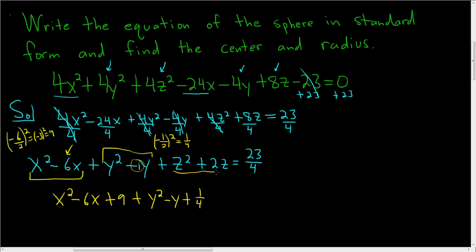Then we do the same thing with the z terms. So plus z squared plus 2z. And we look at the coefficient of z, which is 2. We divide it by 2, we square it. And so we get 1 squared, which is 1. So plus 1.